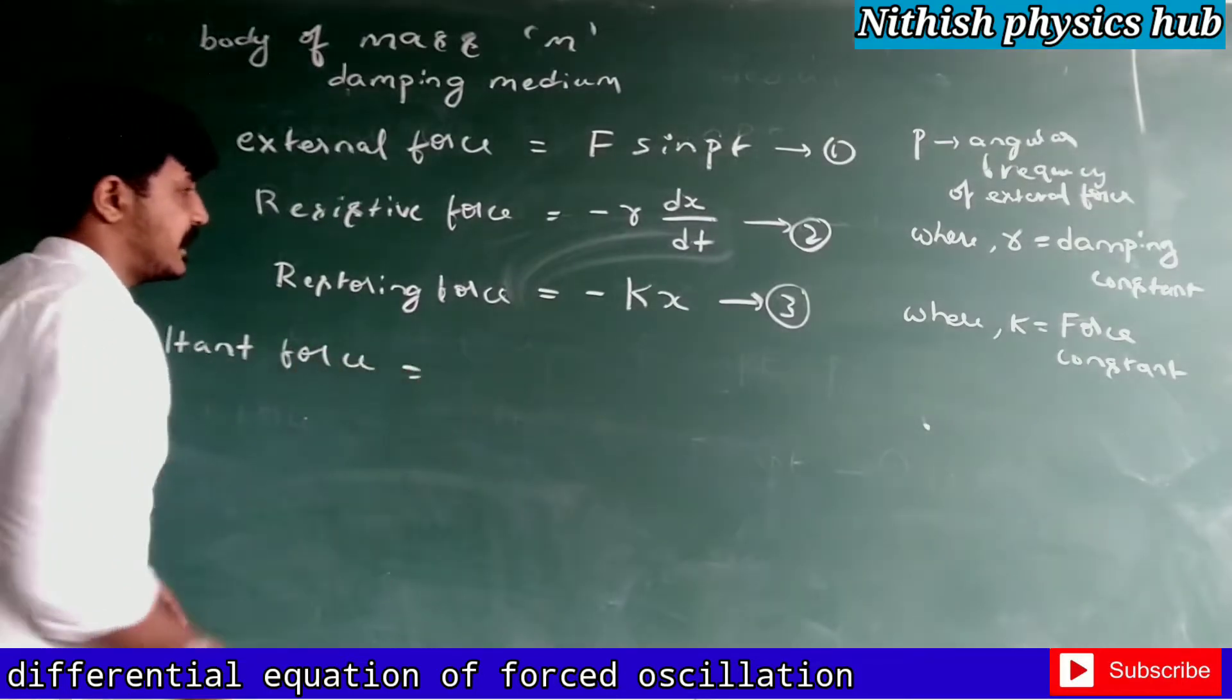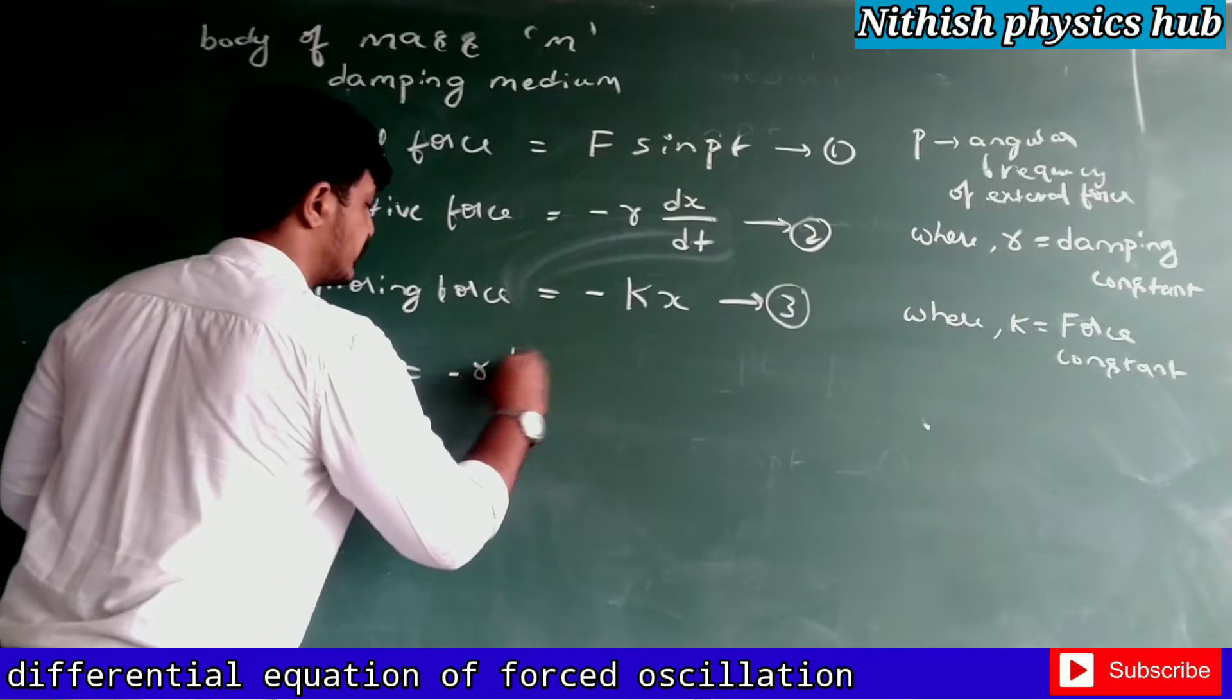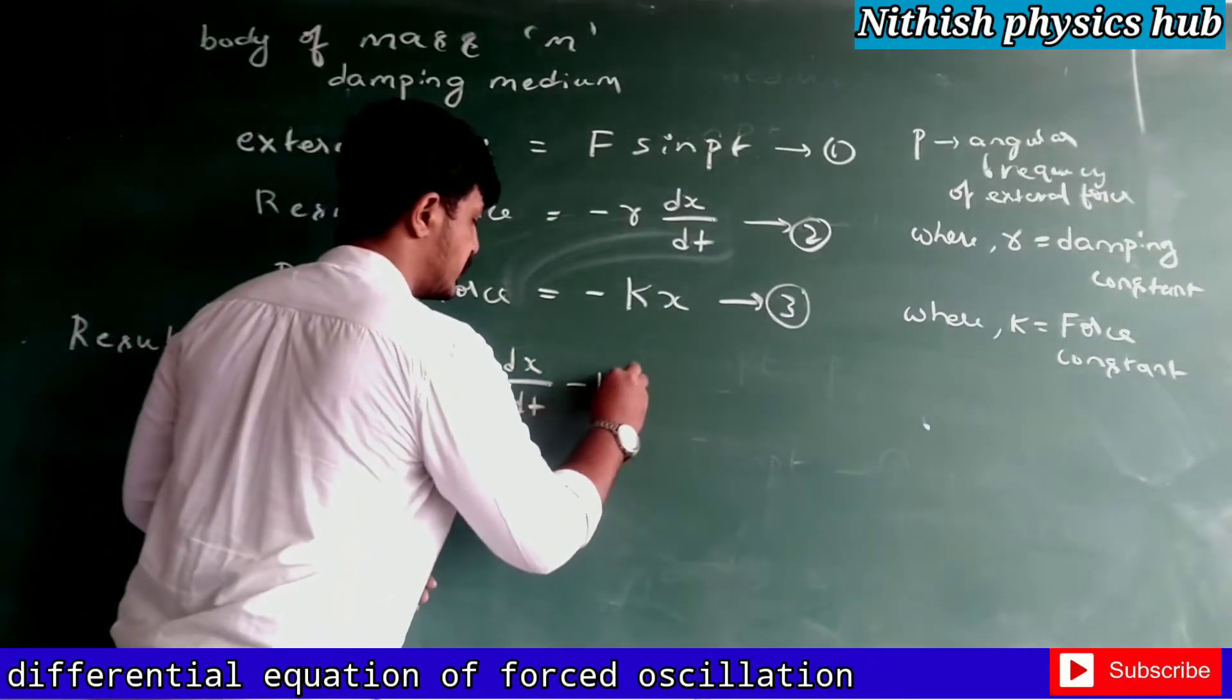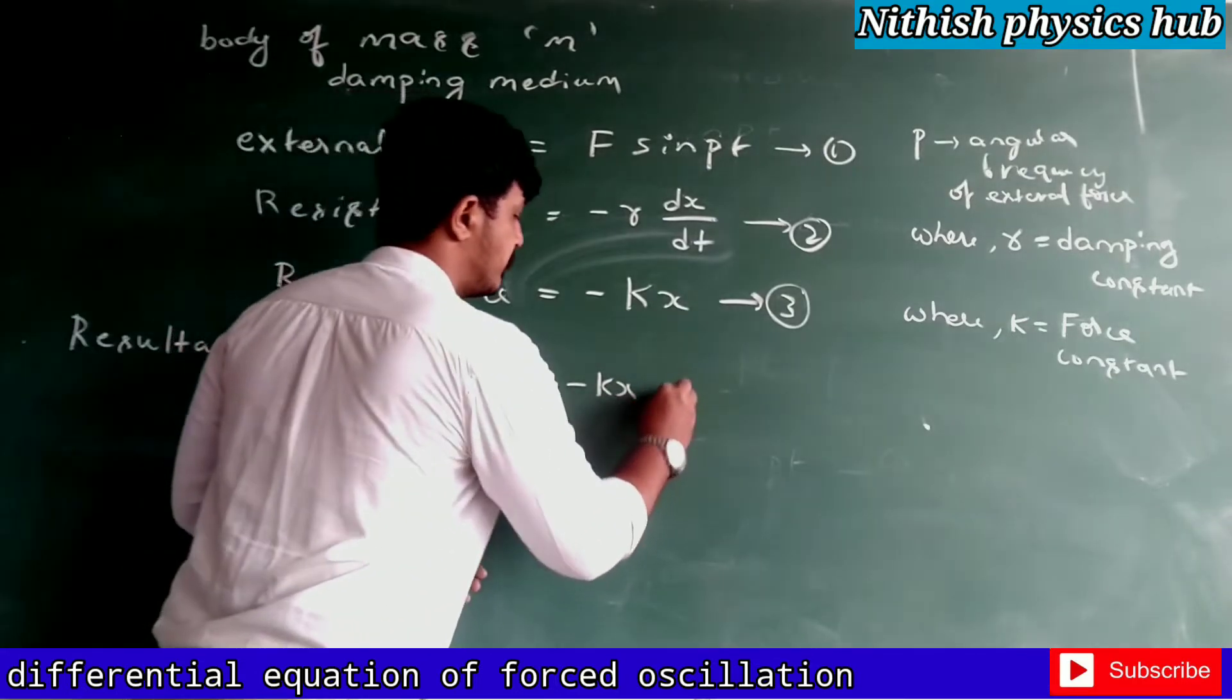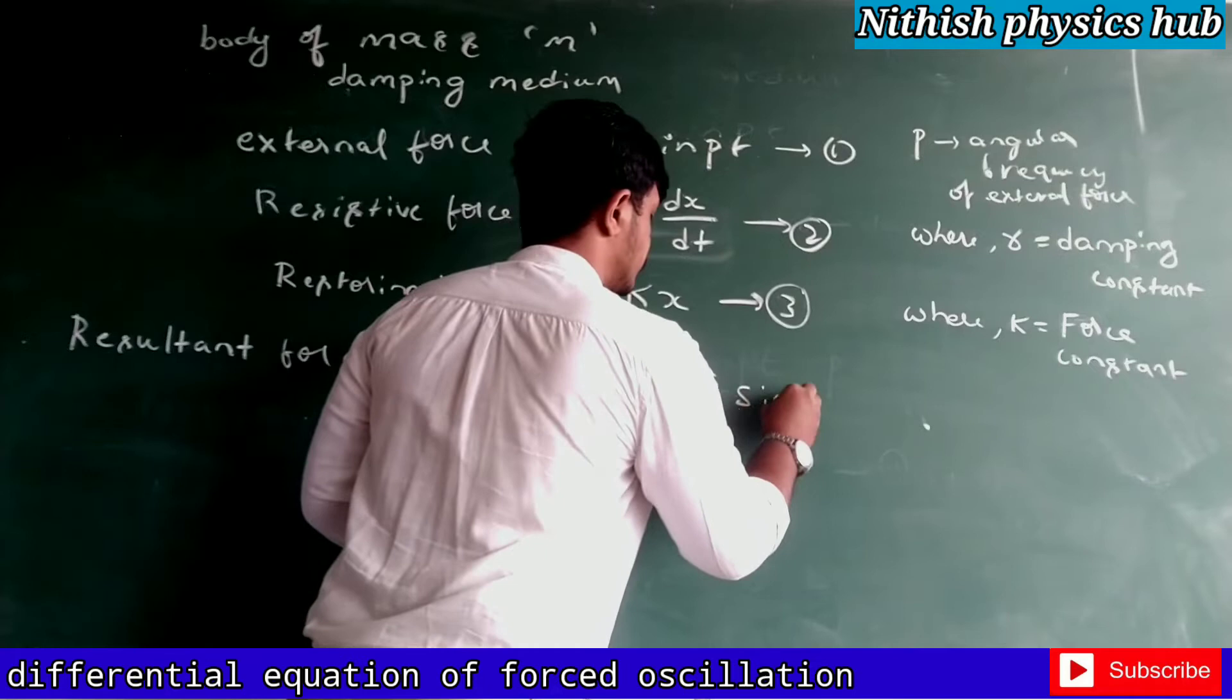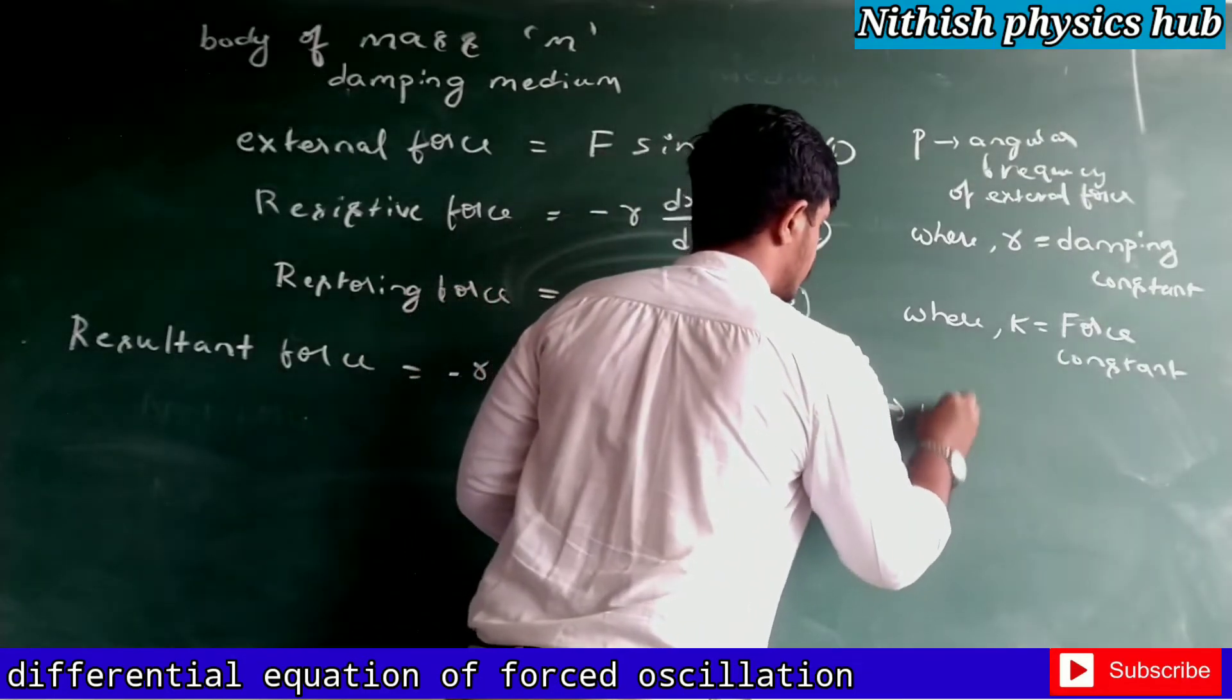...it can be written as negative of r dx by dt and negative of kx plus f sin pt. Take it as equation number 4.